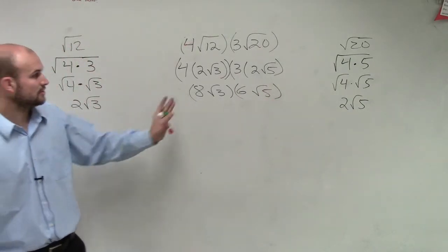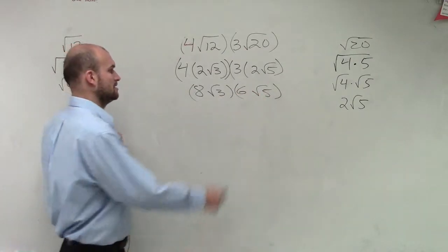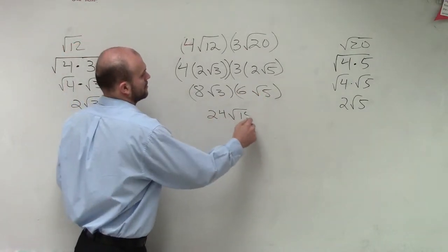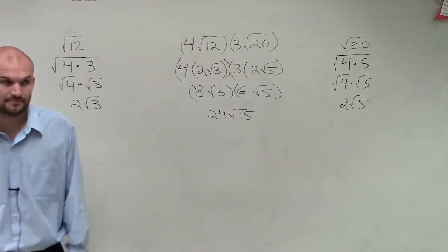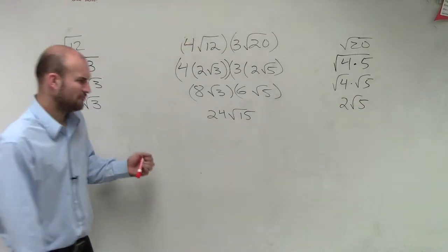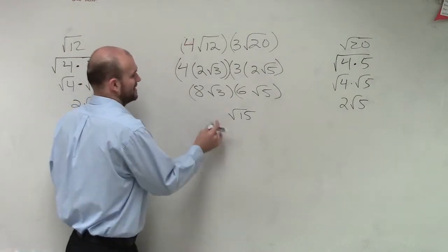Then, what we can do is now multiply across. So, I get 24 square root of 15. And that's your final answer. 8 times 6 is 48. Yes, very good. I don't know what I'm talking about.